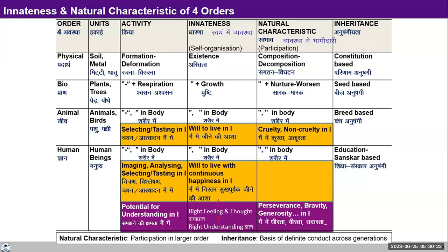We are doing UHV 3 and in UHV 3 we are on lecture 17. We've been talking about the expression of coexistence in the form of the four orders of nature. We've talked about this chart in depth earlier also. Yesterday again we had discussion about this, so even the next lecture is going to be about some detail about the four orders.